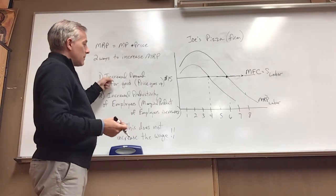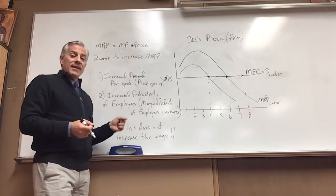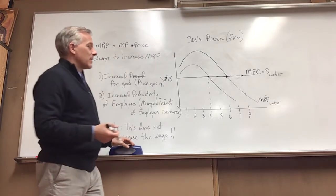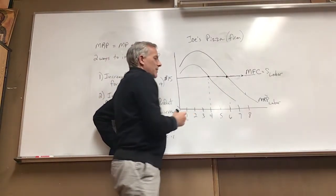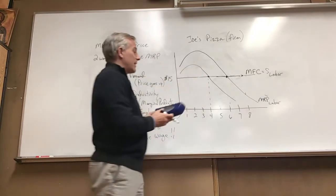But we get this situation and now the firm is only hiring four employees because the marginal revenue product went down. So the price and the marginal product, things that affect the marginal revenue product and can shift that curve left to right. Wage stays the same. It impacts the number of employees that are hired.